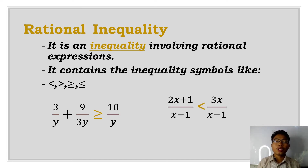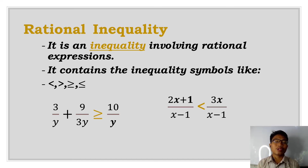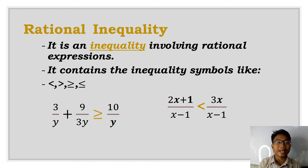Another example of a rational inequality: 2x plus y over x minus 1 is less than 3x over x minus 1. Here, a less than sign is used, making it a rational inequality.